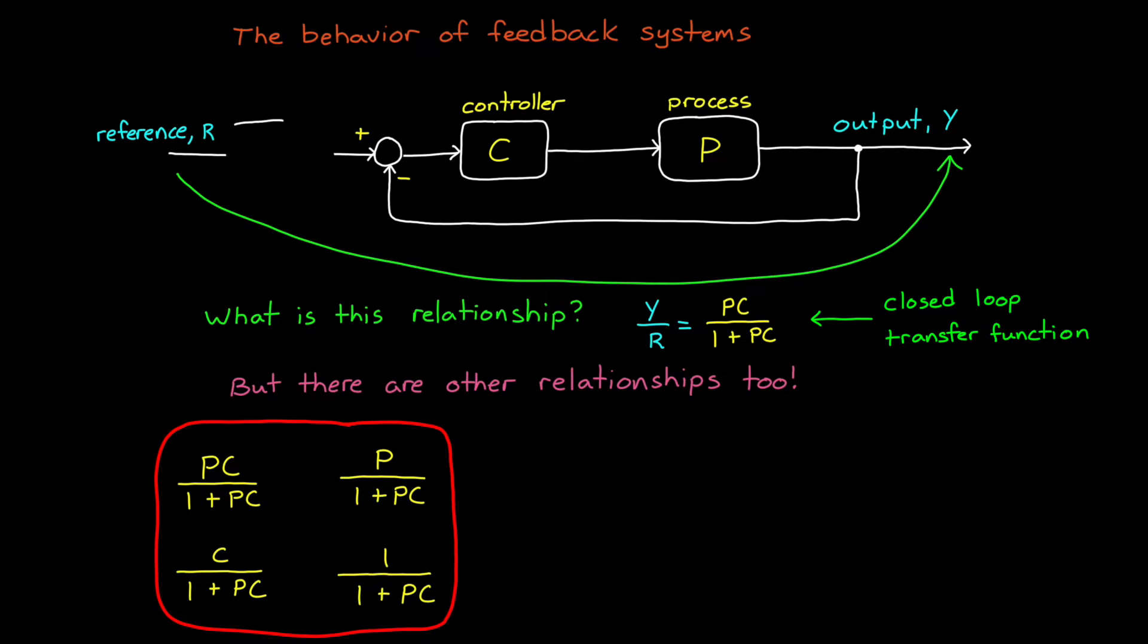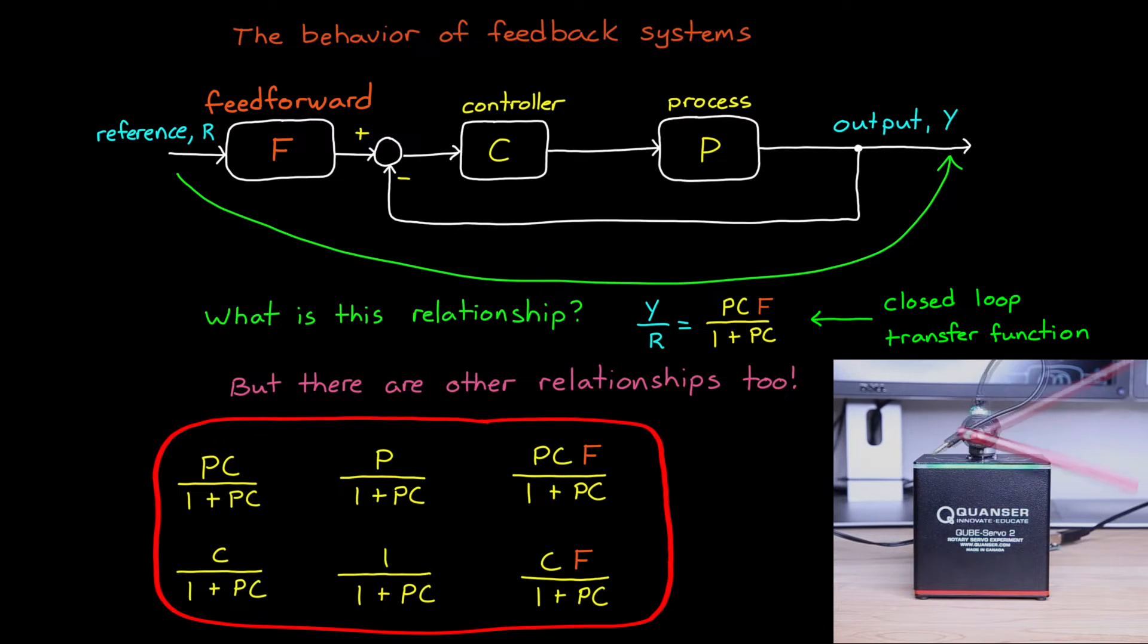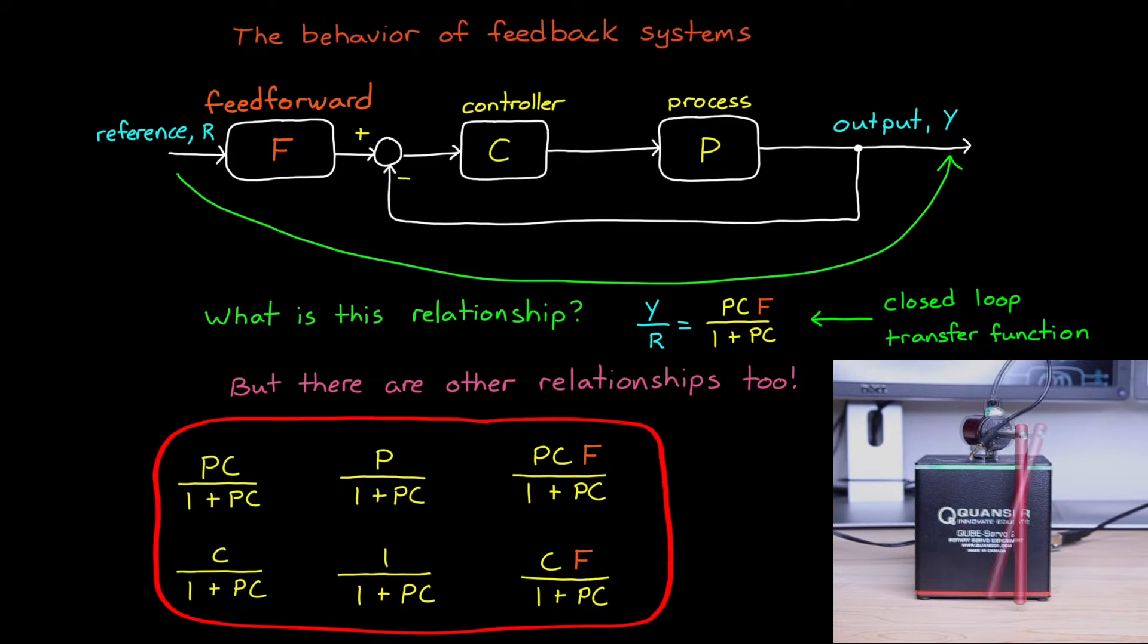And if our system has a feedforward path, then this expands to six. The goal of this video is to provide a little intuition around why we need to look at more than just a single transfer function to fully capture the properties of the system. And it's not going to be all mathematics. I'm also going to demonstrate some of these concepts with some hardware at the end.